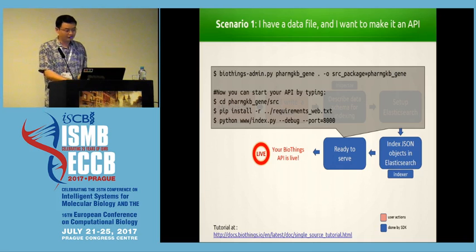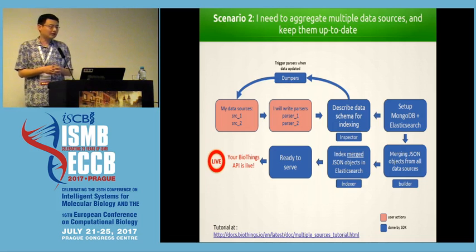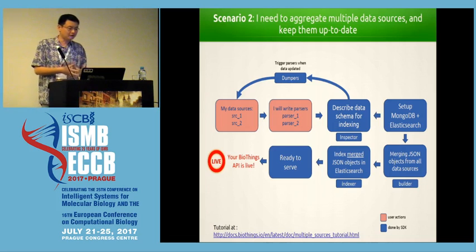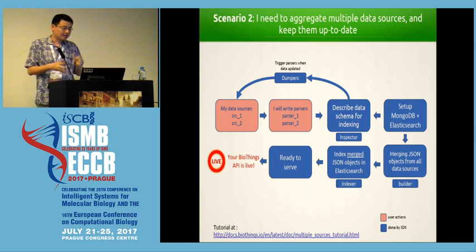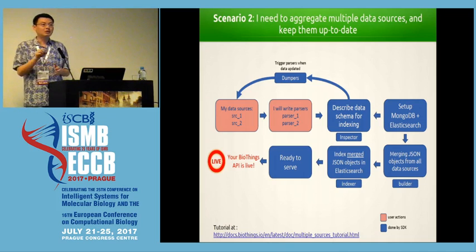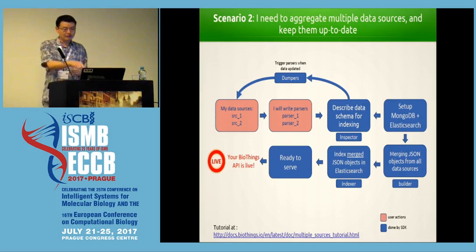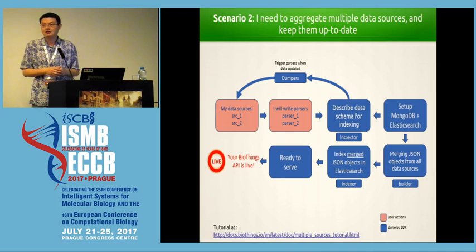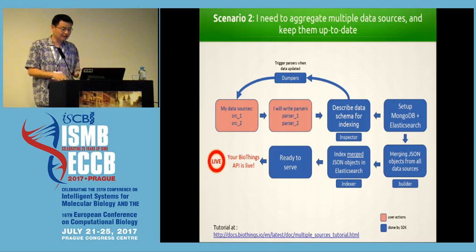We actually have a link at the bottom for the full tutorial. The second scenario is a little more complicated: you may need to aggregate resources from source one and source two. You still need to write all the parsers, but we have a component called dumpers that will monitor all the resources you have and trigger the parser when new resources are available. We also use MongoDB as staging storage before sending to Elasticsearch. Everything else is the same.